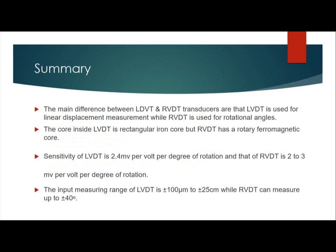As a summary, the main differences between LVDT and RVDT are: LVDT is used for linear displacement measurement while RVDT is used for rotational measurement. The core inside LVDT is a rectangular iron core, while RVDT has a rotary ferromagnetic core. The sensitivity of LVDT is 2.4 mV per volt per mm, and that of RVDT is 2.3 mV per volt per degree of rotation. The linear measuring range of LVDT is plus or minus 100 micrometers to plus or minus 25 cm, while RVDT can measure up to plus or minus 40 degrees.